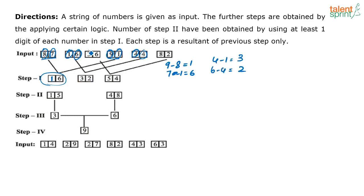Next: you have 3 and 6. So 8 minus 3 is 5, and 6 minus 2 is 4. That is how you arrive at Step 1 — you have found out the difference between the numbers.